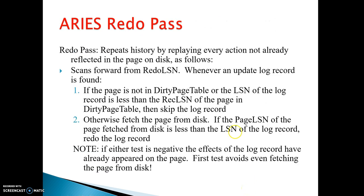The redo pass repeats history by replaying every action not already reflected on disk. Scanning forward from the redo log LSN: if the page is not in the dirty page table, or the LSN of the log record is less than the record LSN of the page in the dirty page table, skip the log record. Otherwise, fetch the page from disk. If the page LSN of the fetched page is less than the LSN of the log record, redo the log record. If either test is negative, the effects of the log record have already appeared on the page. The first test avoids even fetching the page from disk.